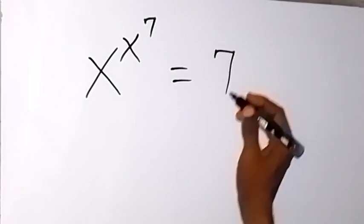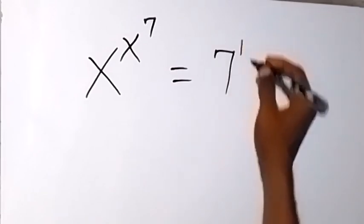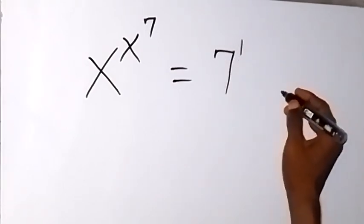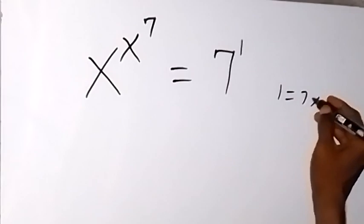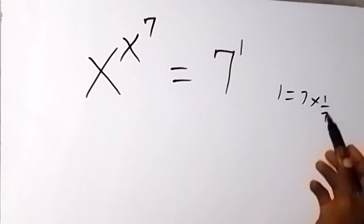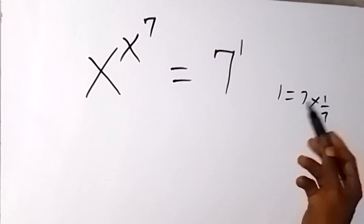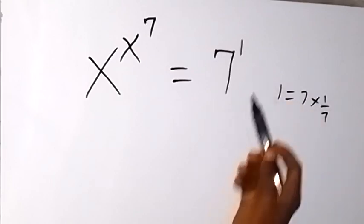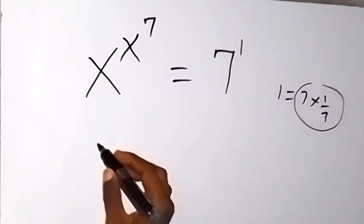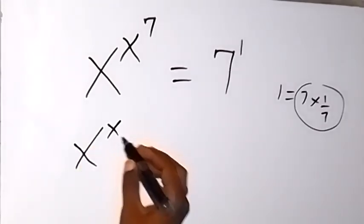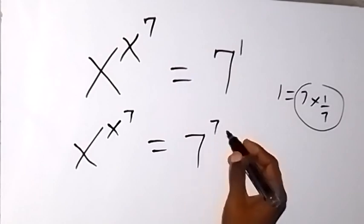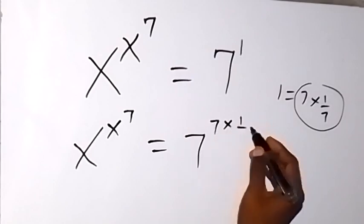Now, we should note that this 7 can also be written as 7 raised to power 1. And this 1 here, we can express it as 7 times 1 over 7. So 1 is the same as 7 times 1 over 7. So instead of writing power 1, let's write 7 times 1 over 7, and we have x raised to power x, raised to power 7, now equal to 7 raised to power 7 times 1 over 7.